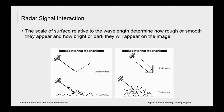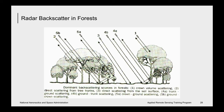Finally, there is volume scattering — the scattering of radar energy within a volume or medium. It usually consists of multiple bounces and reflections from different components within the volume — for example within a snowpack or a vegetation layer. In a forest, scattering may come from the leaf canopy at the top, leaves on branches further below, and tree trunks. The figure illustrates all possible scattering mechanisms within a forest, including crown volume scattering, direct scattering from tree trunks, direct scattering from the soil surface, trunk-ground and ground-trunk scattering, and crown-ground or ground-crown scattering.